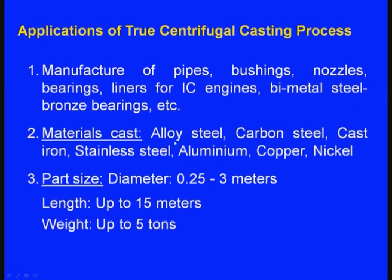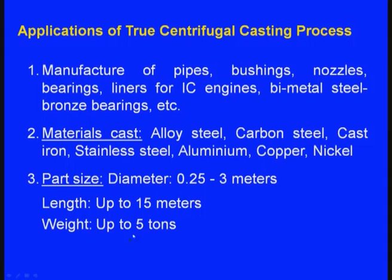Materials cast include alloy steel, carbon steel, cast iron, stainless steel, aluminium, copper, and nickel. Part size: diameter varies from 0.25 metres to 3 metres, length up to 15 metres, and weight up to 5 tons — meaning both small and very large castings can be produced.